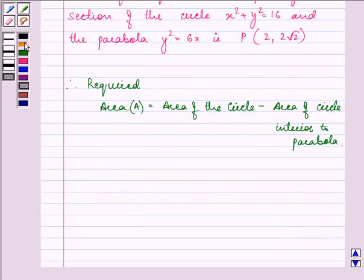Area of the circle is πr². The radius of the circle is 4, so it is π(4)² minus the area interior to the parabola, which will be 2 times integral 0 to 2 y dx minus integral 2 to 4 y dx.